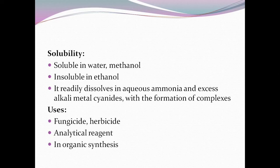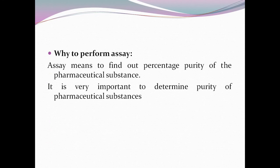Copper sulphate is used as a fungicide and herbicide, as an analytical reagent, and in organic synthesis. Assay means to find out the percentage purity of a pharmaceutical substance. It is very important to determine purity of pharmaceutical substances, whether it is an API or a test sample. One of the methods is by volumetric analysis, such as the titration we are going to perform.